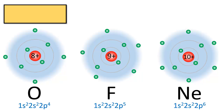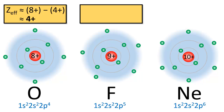For oxygen, the charge of the nucleus is 8+, and the 4 core electrons take away 4+ due to shielding, resulting in an effective nuclear charge of 4+. In the case of fluorine, the charge of the nucleus is 9+, and the 4 core electrons take away 4+ due to shielding, resulting in an effective nuclear charge of 5+.